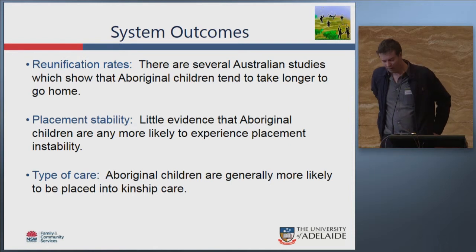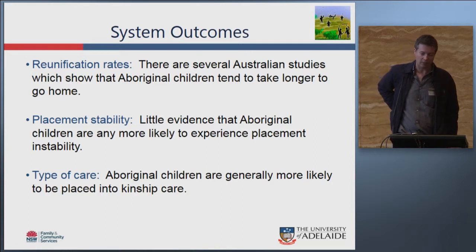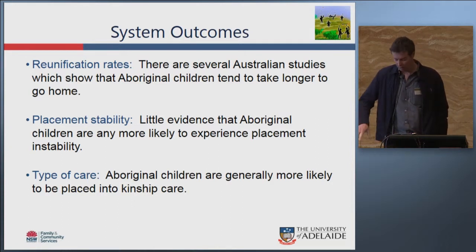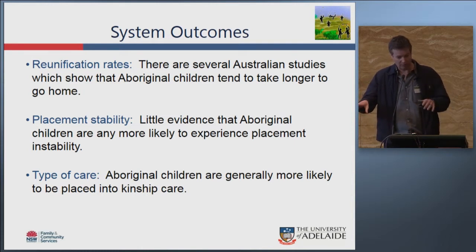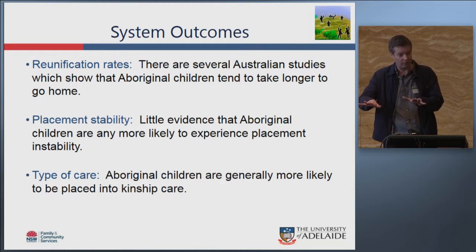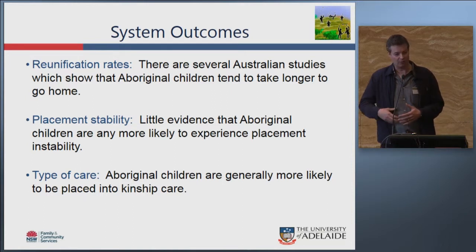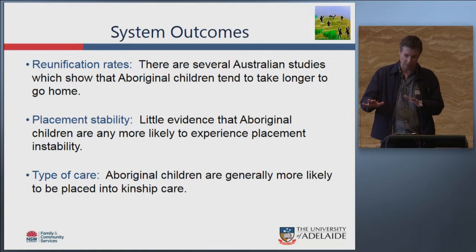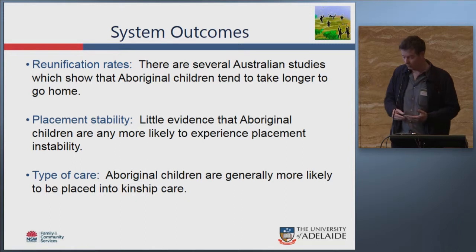Aboriginal children are much more likely to go into kinship care. As noted in the first POCLS report I wrote on kinship care, Aboriginal children placed with other relatives fall into two distinct groups: grandparents, and other relatives such as uncles and aunts. The latter group — other relatives — are much more likely to be Aboriginal than non-Aboriginal, and to the extent there are differences between grandparent and other relative placements, there may be different outcomes for young Aboriginal people.